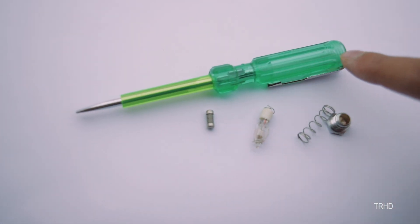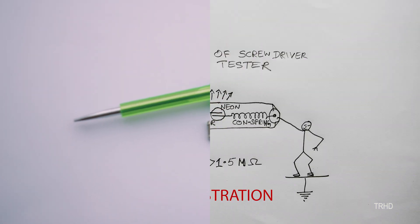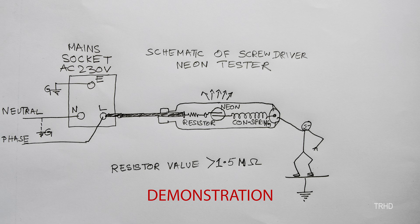So that was it guys, these were the items present in this neon lamp tester. Now I'll show you a schematic diagram of this neon lamp tester with the help of which you can easily understand how it works.